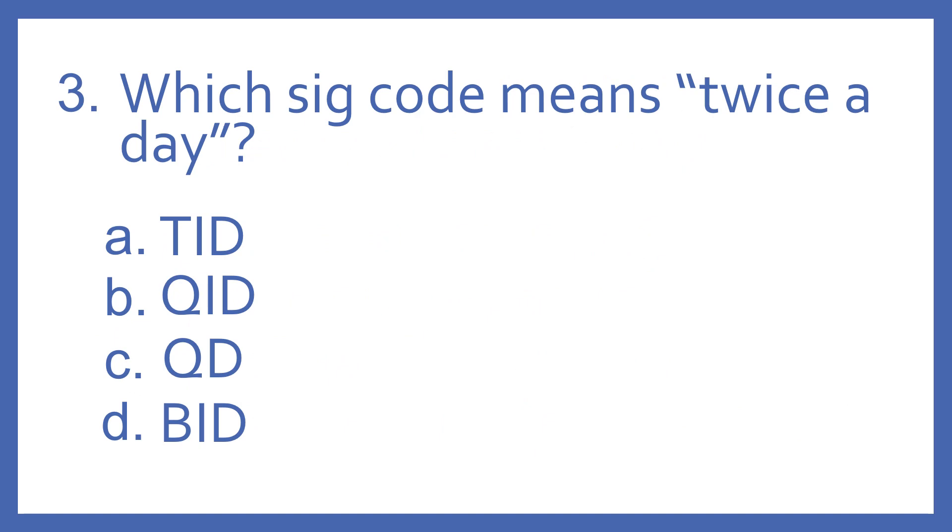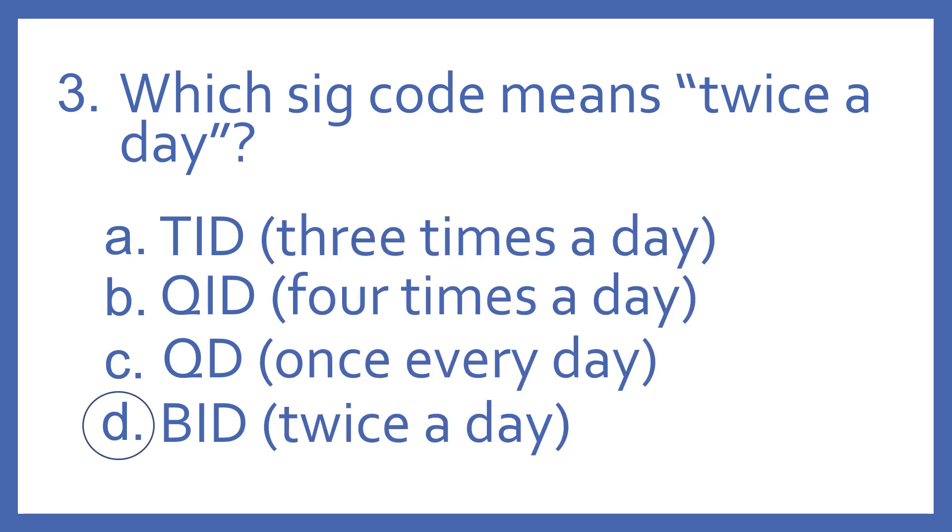Number three, which SIG code means twice a day? A, TID, B, QID, C, QD, or D, BID? And the answer is D, BID means twice a day. TID means three times a day, QID means four times a day, and QD means once every day.